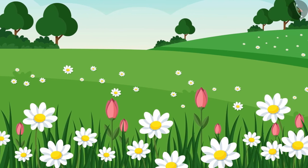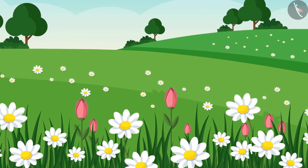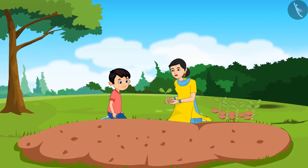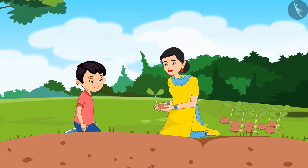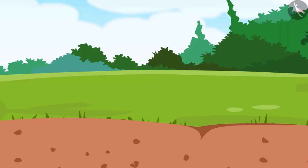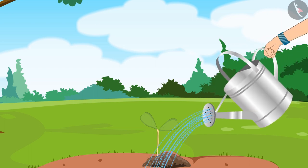So children, do you know how important it is to plant trees? Yes, today Chotu is planting saplings in the garden with his mother. Look at this Chotu, this is the way to plant saplings. After this we have to water them. Mom, even I want to plant saplings.